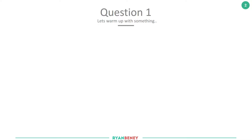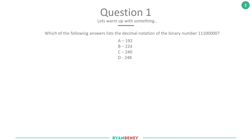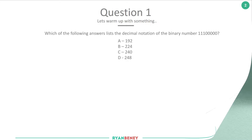Okay, so question one - I'm going to warm up with something easy. The question is: what is the decimal notation of the binary number 11100000? The answers are: A) 192, B) 224, C) 240, or D) 248. At this point I encourage you to pause the video, get a pen and paper, and try to work out what you think the answer is. It's really important that you follow the process of pausing and doing the calculations, because with subnetting repetition is key.